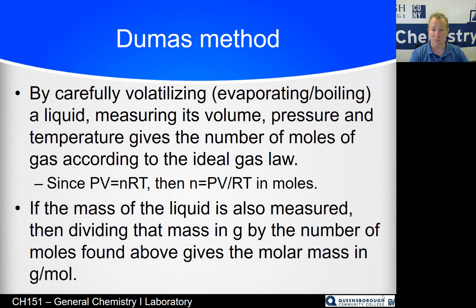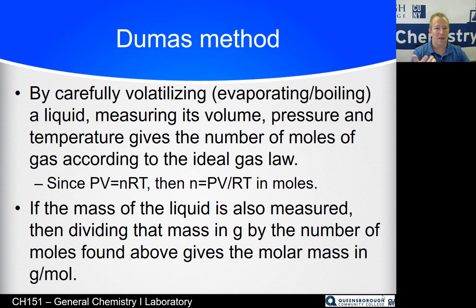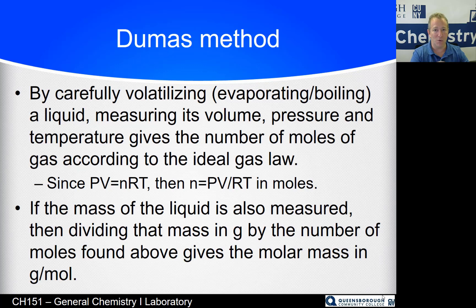That method is called the Dumas method. By carefully volatilizing — vaporizing a liquid, they don't even necessarily have to boil it, just vaporize the liquid — and measuring its volume, if we can then condense it back down and get its mass, we can figure out the number of moles of compound and the mass of the compound, and we have the two pieces of our equation.